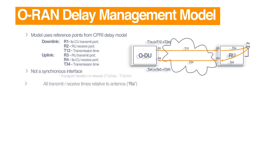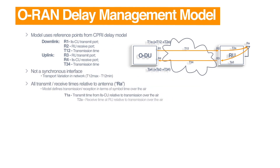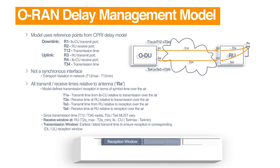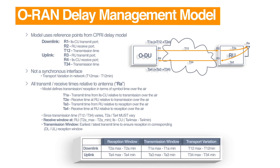The front haul interface is neither synchronous nor a perfect interface — it has variations. Delay management refers to the practice of the DU and RU sending and receiving information at the correct time. This time is determined by the processing time and the receive buffer memory at the DU and the RU, as well as the transport delays. ORAN does not specify the timing constraints for these, but it does specify how to send and receive based on these factors.